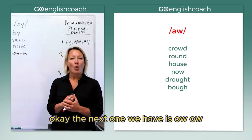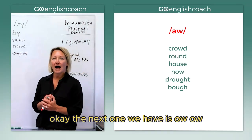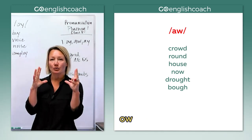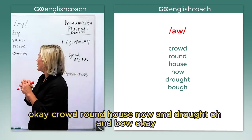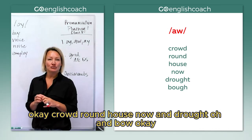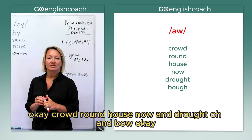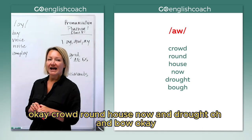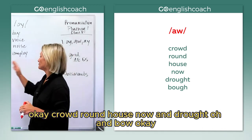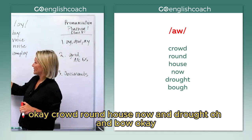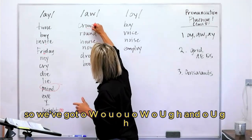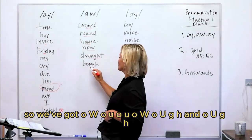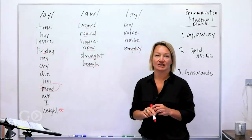The next one we have is 'ow' — ow. You can see how very open my mouth is: ow. The sample words are: crowd, round, house, now, and drought. Oh, and bow. So we've got the spellings O-W, O-U, O-U, O-W, O-U-G-H, and O-U-G-H.